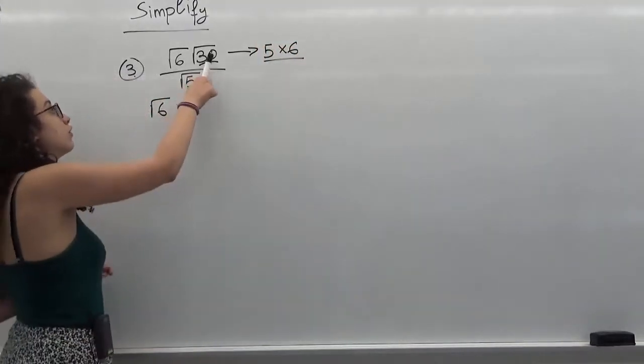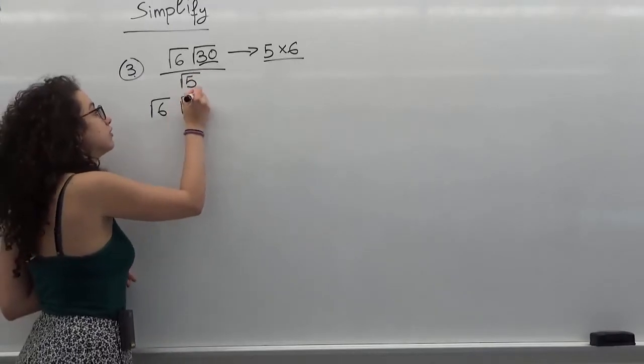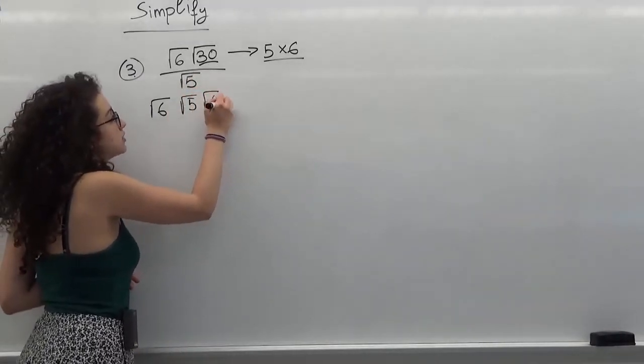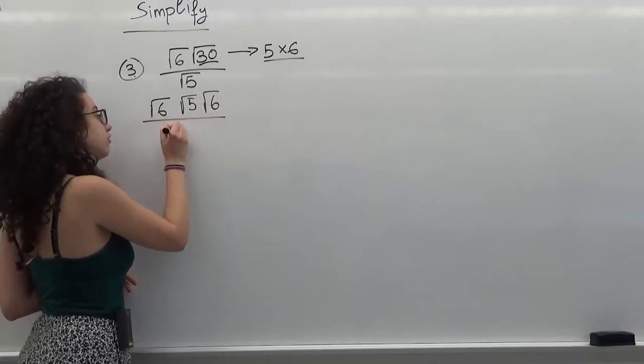So I'm going to write radical of 30 as radical of 5 times the radical of 6 over radical of 5.